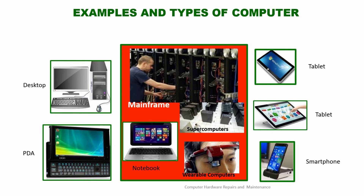We'll go to the examples and types of computers. We have mainframe computers, supercomputers, and microcomputers. Mainframe computers are those large computers used in industry or in military systems. Supercomputers are also used in very sophisticated electronic work. Microcomputers include desktop computers, PDAs (personal digital assistants), network computers, and even wearable computers — such as a smartwatch you wear on your hand, or a device worn on your face. We also have tablet computers and smartphones. All of these are examples of microcomputers.